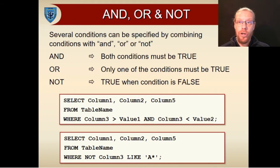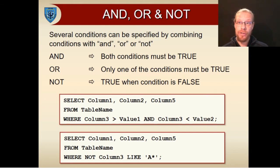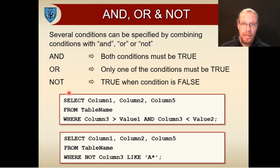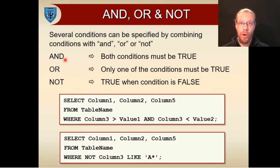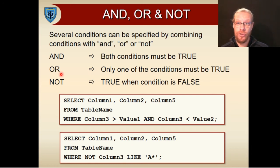Often, a Boolean comparison will not be able to specify exactly which information you need with just a simple equals, or bigger than, or less than. AND, OR, and NOT provide ways of modifying or combining Boolean expressions to more precisely specify your needs. AND performs a logical AND — the Boolean expression returns true if both parts of the expression are true. OR, on the other hand, returns true when either of the parts are true, and only returns false when both are false.